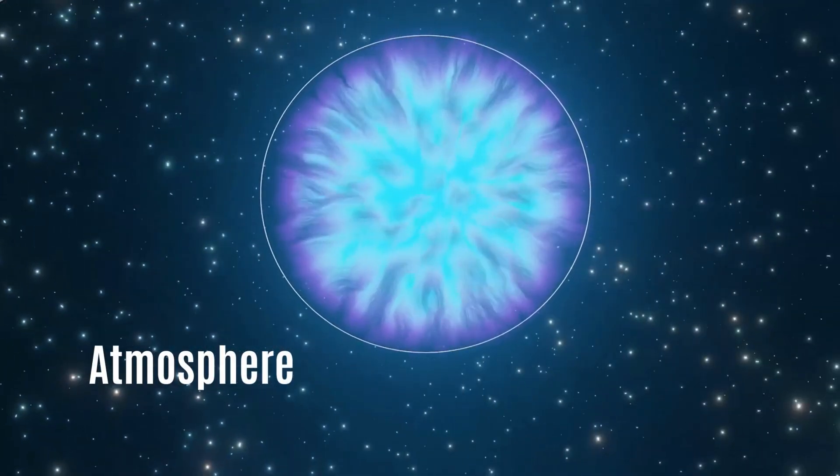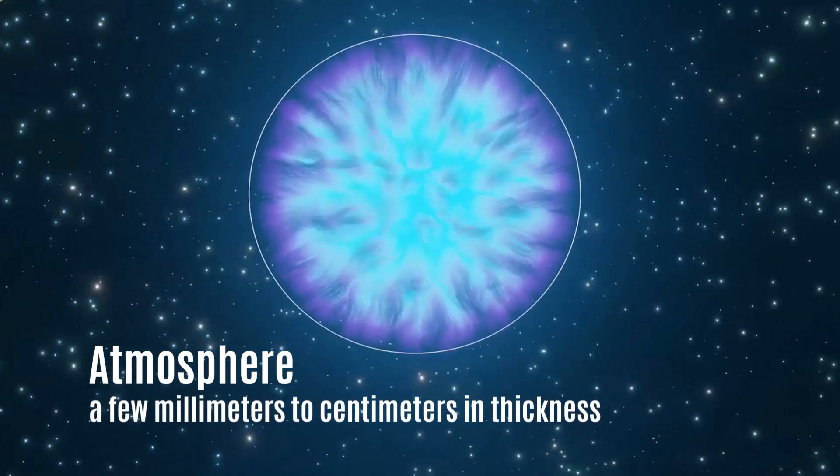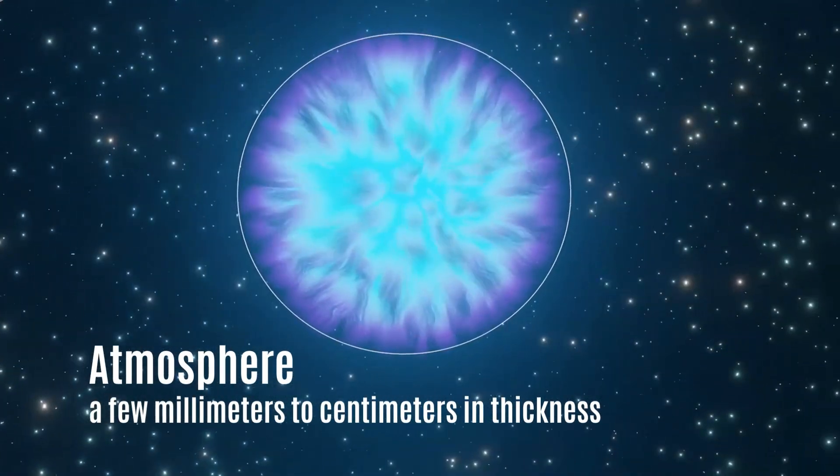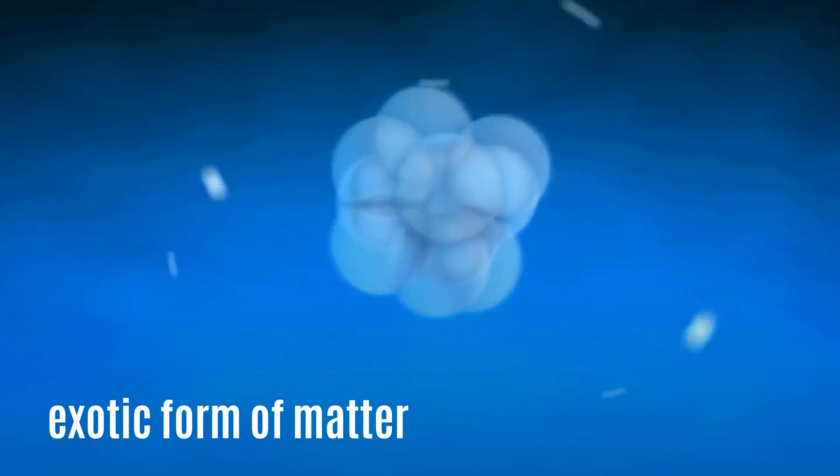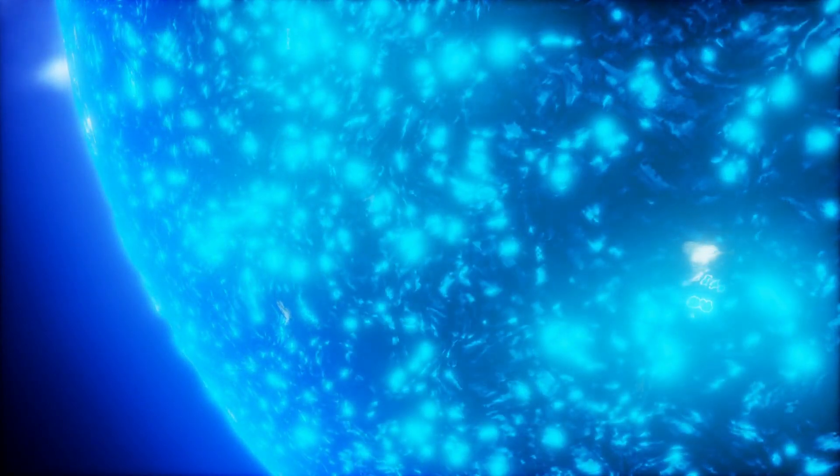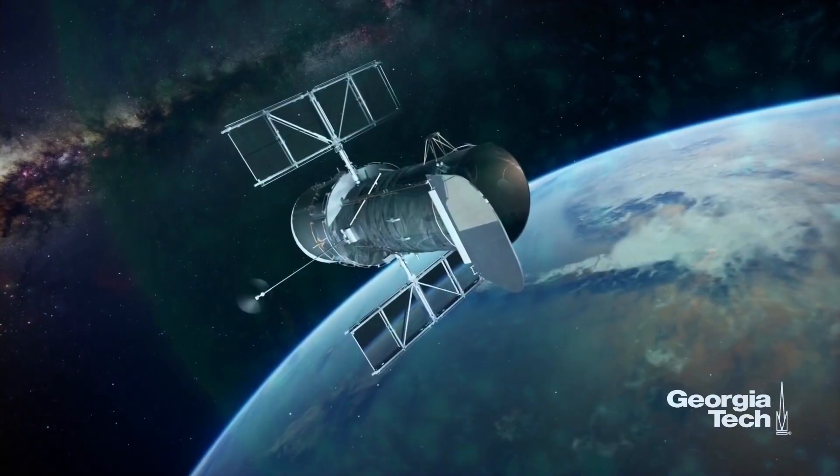Neutron star atmosphere is remarkably thin, measuring only a few millimeters to centimeters in thickness. It consists of a highly compressed and exotic form of matter. Neutron stars, which are incredibly dense and compact remnants of massive stars, do not have a conventional atmosphere like planets or regular stars.